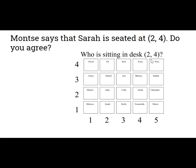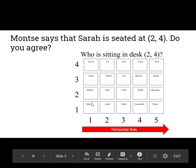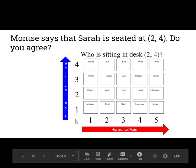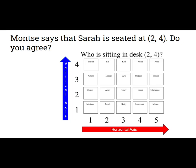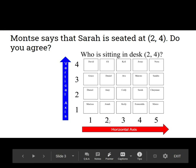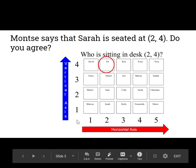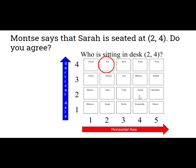Remember that the first coordinate in an ordered pair, which in this case is the 2, corresponds to the horizontal axis. And the second coordinate in the ordered pair corresponds to the vertical axis. It seems that Monza made the mistake of going up first and then 4 to the right. We actually start at the origin and go 2 units to the right. If we made the mistake that Monza made and went vertical first — 2 units up and then 4 units to the right — we would land at Sarah's desk, but that would be incorrect.